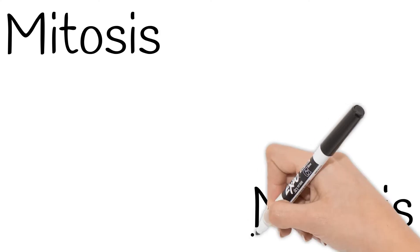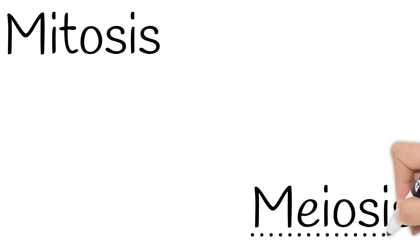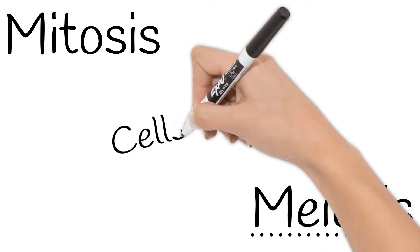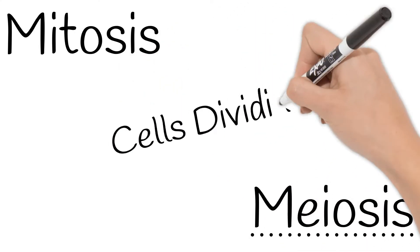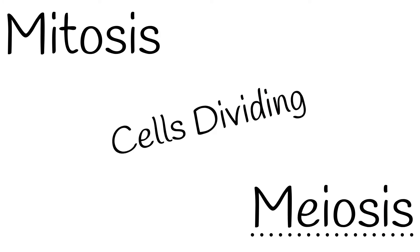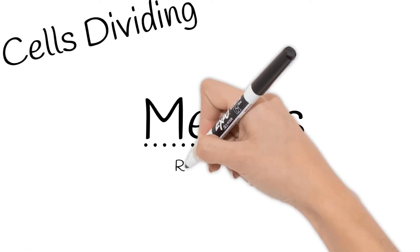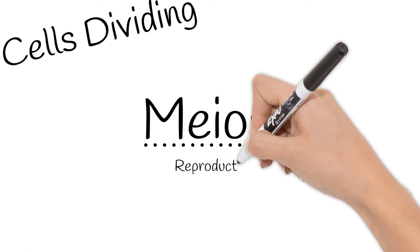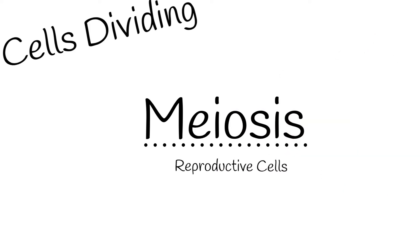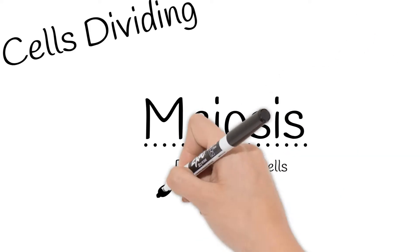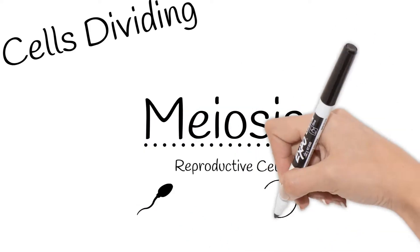Today's topic is all about meiosis. Meiosis is another form of cell division. Meiosis only happens with reproductive cells, so sperm and eggs.